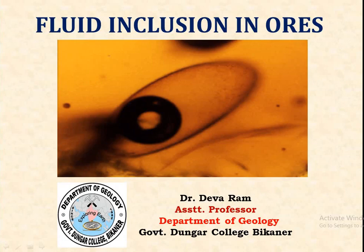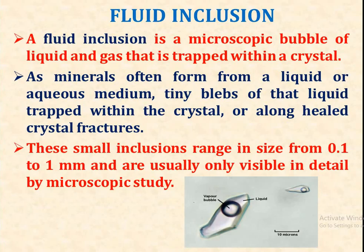Welcome to this YouTube channel. Today we are going to discuss a very important topic of economic geology: fluid inclusions in pores. A fluid inclusion is a microscopic bubble of liquid and gas trapped within a crystal. As minerals often form from a liquid or aqueous medium, tiny blebs of that liquid become trapped within the crystal or along healed crystal fractures. These small inclusions range in size from 0.1 to 1 mm and are usually only visible by microscopic study.